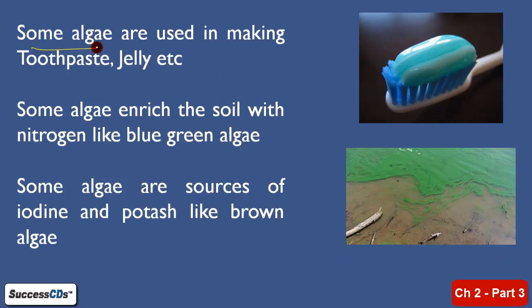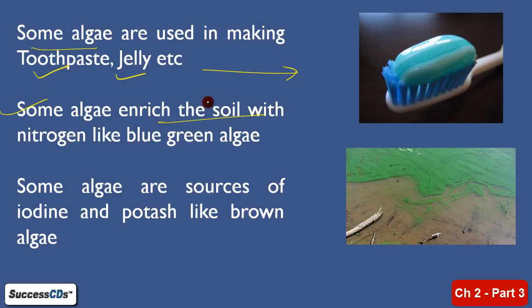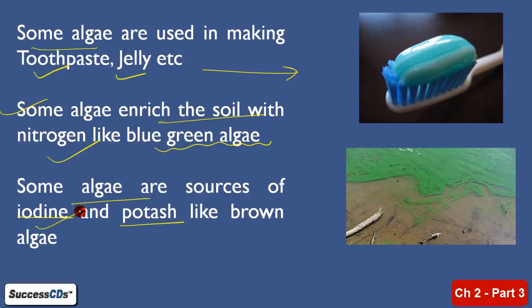Some algae are used in making toothpaste, jellies, etc. As you can see, this picture is indicating a toothpaste — some algae are used in making toothpaste. There are few algae which enrich the soil also. For example, we have blue-green algae, which is a kind of algae that can actually add nitrogen to the soil. Some algae are also sources of iodine and potash — you can eat them and they supply minerals like iodine and potash.